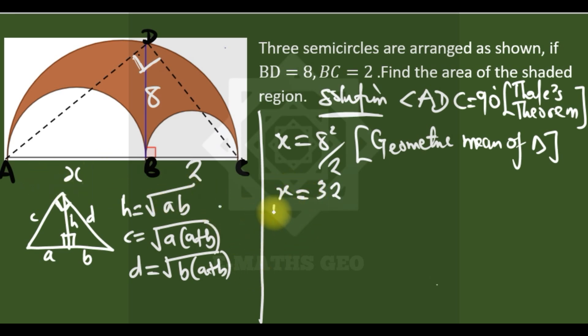So from here we can see that the area we are looking for, area shaded, is now area of the big one, which is half π. Because we know that area of a semicircle is the same as half of area of a circle. So half π times - the diameter is x plus 2, and x plus 2 is 34, so we have 34 over 2, which is 17 - squared, minus half π...